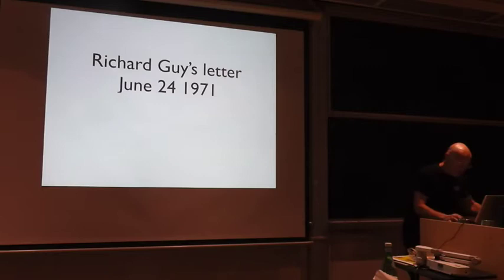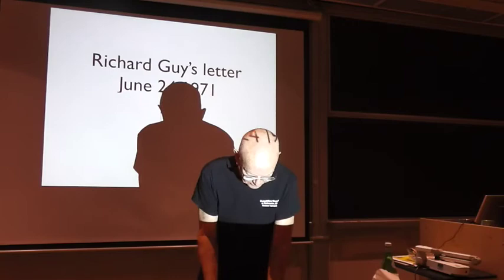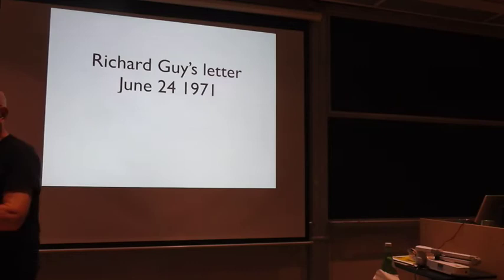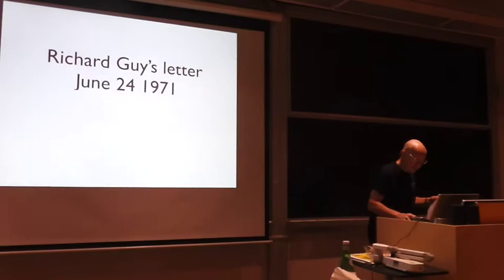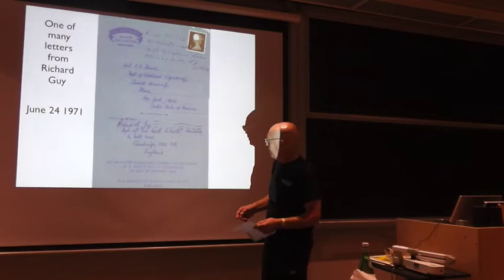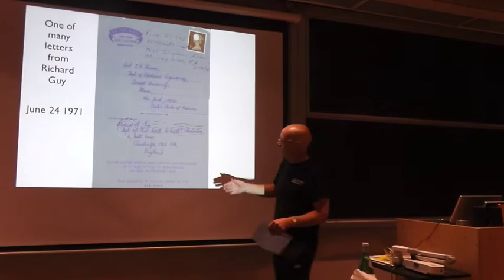So Richard Guy, when I was working on the book, the 1973 Handbook of Integer Sequences, I would get letters from Richard Guy from all over the world as he traveled around. He would collect sequences and send them to me. And this air letter was mailed on June 24th, 1971. He started writing it in Oxford, and he finished it in Cambridge, and he sent it to me at Cornell. And I had moved from Cornell already to Bell Labs, and so it was forwarded and it reached me.